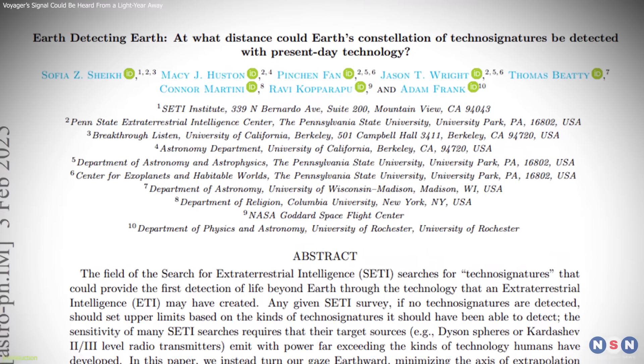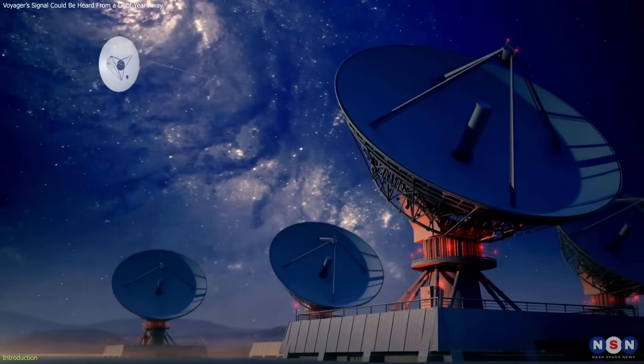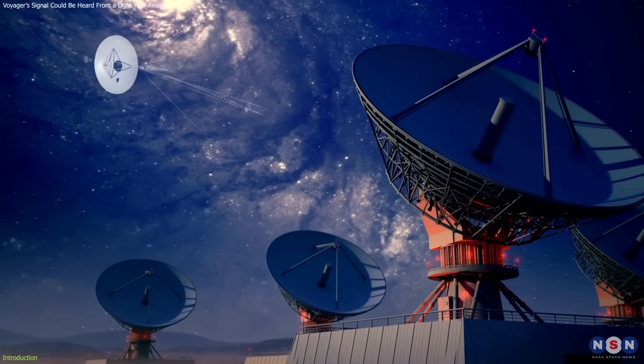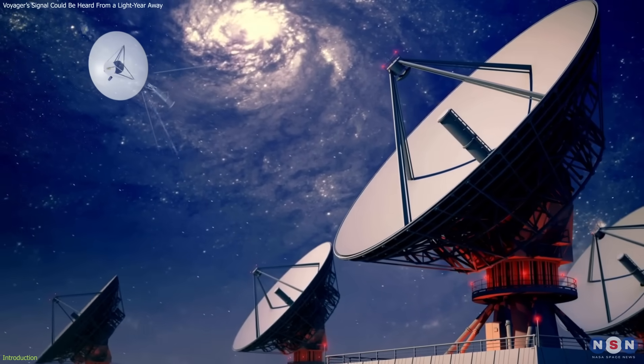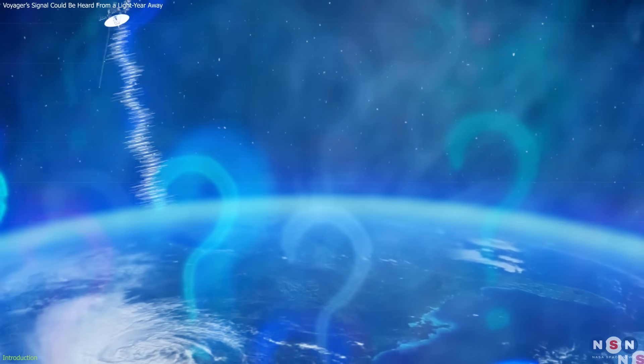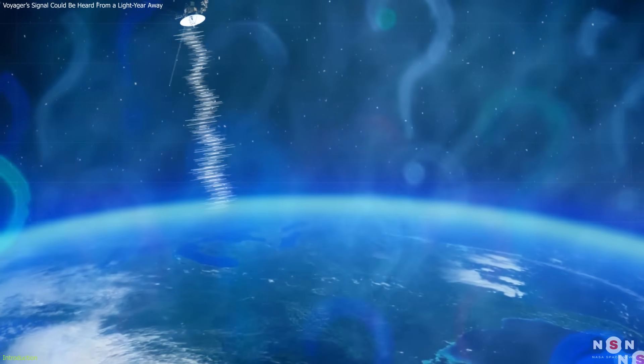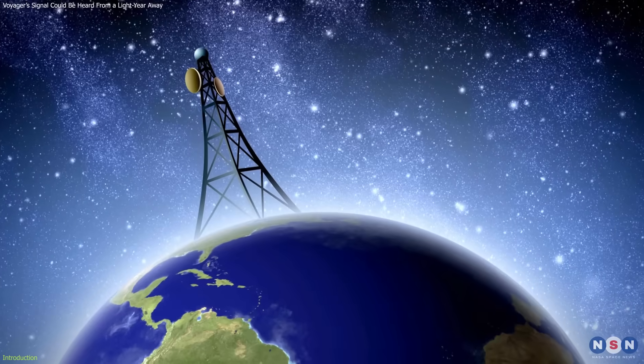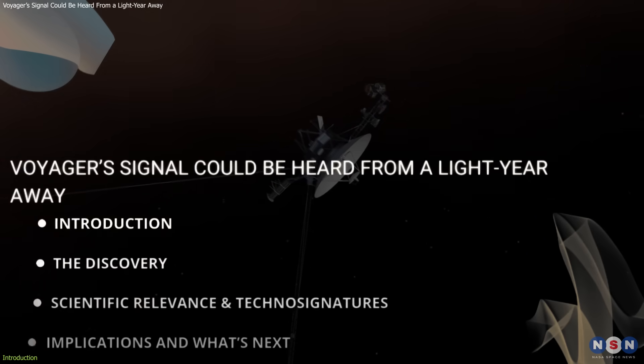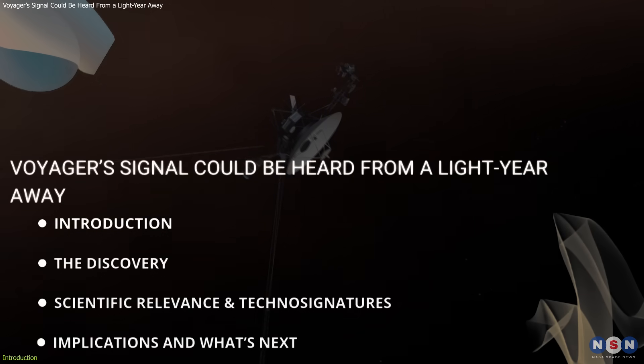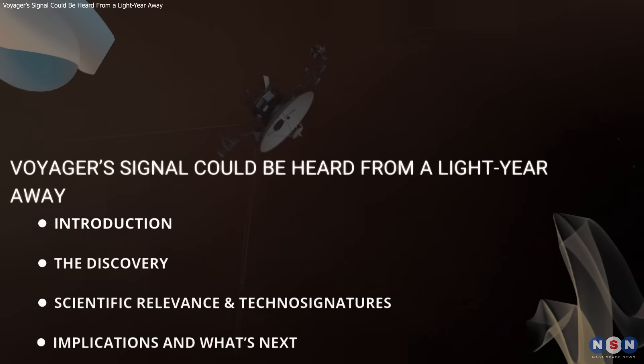A recent study shows that with today's tech, Earth-based observatories could detect these faint signals from nearly one light year away. This raises an intriguing question: if we can detect such weak transmissions, what does that say about Earth's signals reaching space? Join us as we dive into the implications of this discovery for SETI and the search for extraterrestrial intelligence.